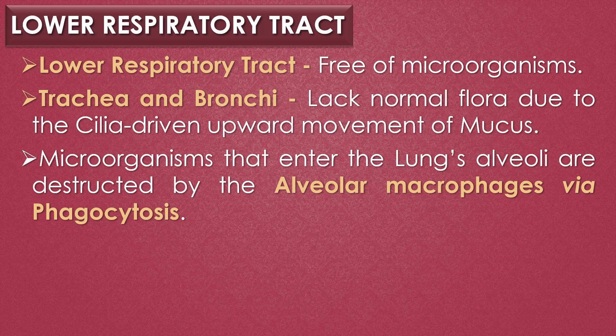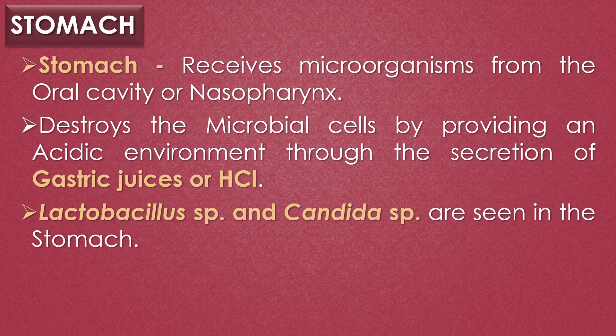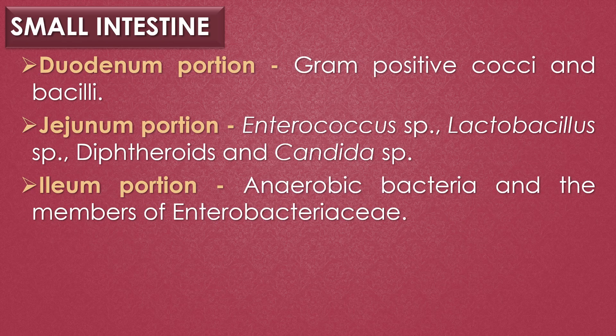The lower respiratory tract is free of microorganisms. The trachea and bronchi lack normal flora due to the cilia-driven upward movement of mucus. Microorganisms that enter the lung alveoli are destroyed by alveolar macrophages via phagocytosis. The stomach receives numerous microorganisms from the oral cavity and nasopharynx and destroys microbial cells by providing an acidic environment through secretion of gastric juices and hydrochloric acid. Lactobacillus species and Candida species are evidently seen in the stomach.